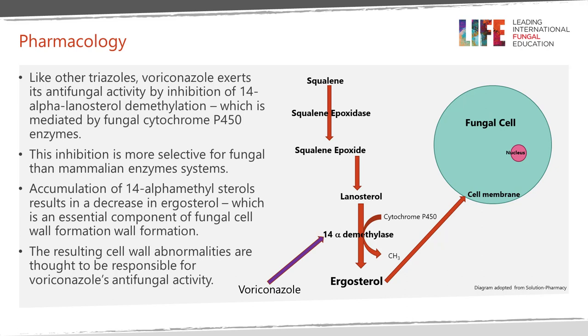Like other triazoles, voriconazole works as an antifungal agent by inhibiting the 14-alpha-lanosterol demethylation, which is mediated by fungal cytochrome P450 enzymes. This inhibition is more selective for fungal than human mammalian enzyme systems. When you get accumulation of alpha-methyl sterols, this results in a reduction in ergosterol, which is an essential component of fungal cell formation. So you get cell wall abnormality — holes in the cell walls — and this is what allows voriconazole to have its antifungal activity.